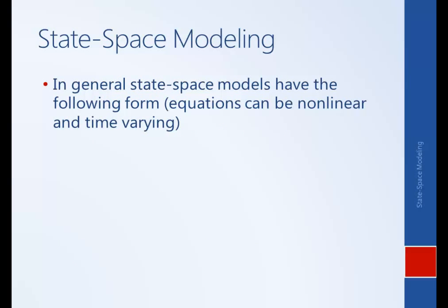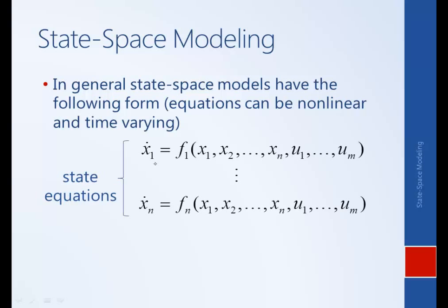In general, state-space models have the following form. We have a derivative for each of the state variables, and each of those derivatives is a function of the other state variables and all of the inputs, where there could be more than one input. These are all first-order differential equations — a single first-order derivative being a function of only state variables and inputs. One thing that's interesting to note is that these functions can be non-linear and time-varying. The function itself could be a state variable squared, the sine of a state variable, etc., and the coefficients don't necessarily need to be constant. So this is a very general format applicable to basically any sort of dynamic system.